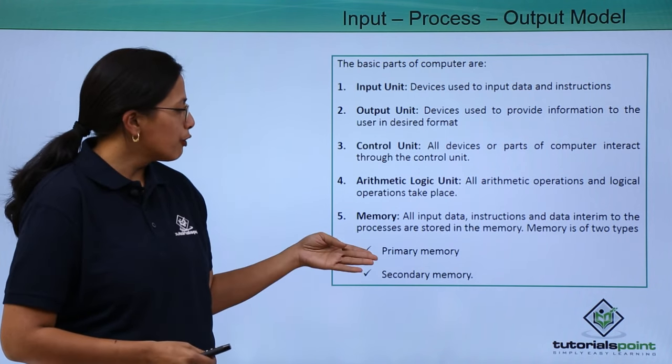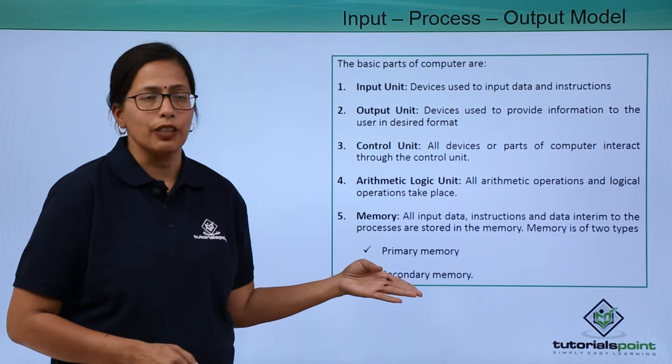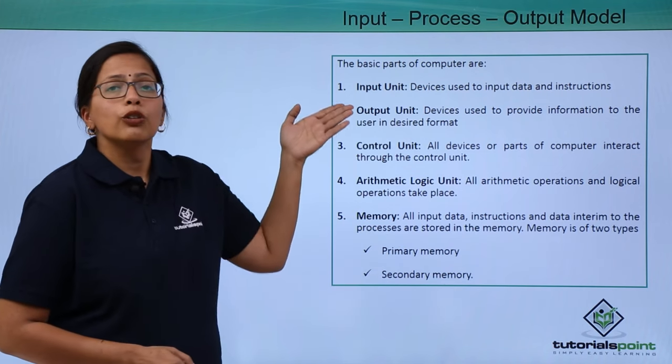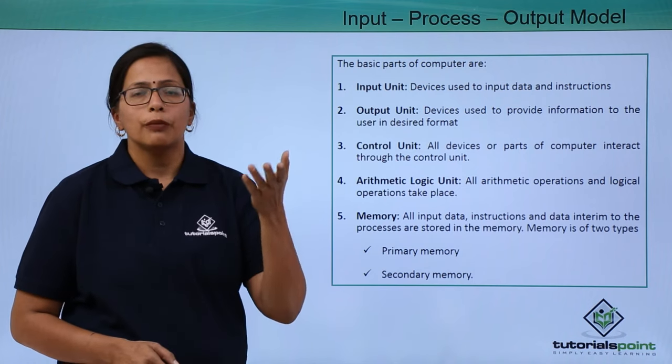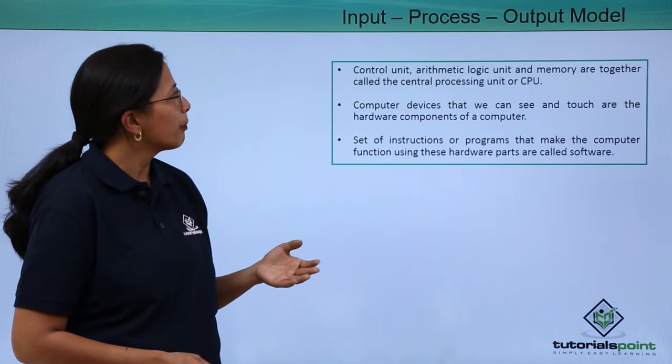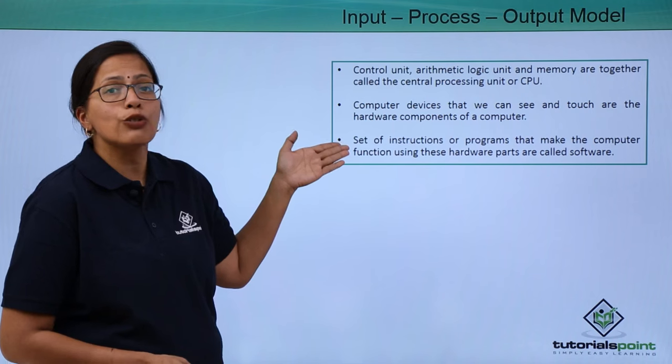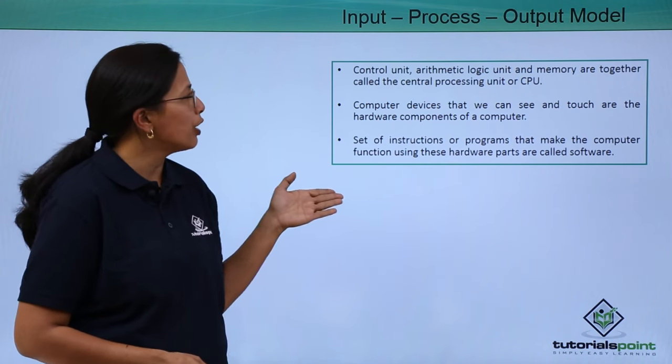The memory is of two types: primary memory and secondary memory. Input unit could be your keyboard or mouse. The output unit could be your printer or your monitor. These are some of the things that you should keep in mind about a computer.